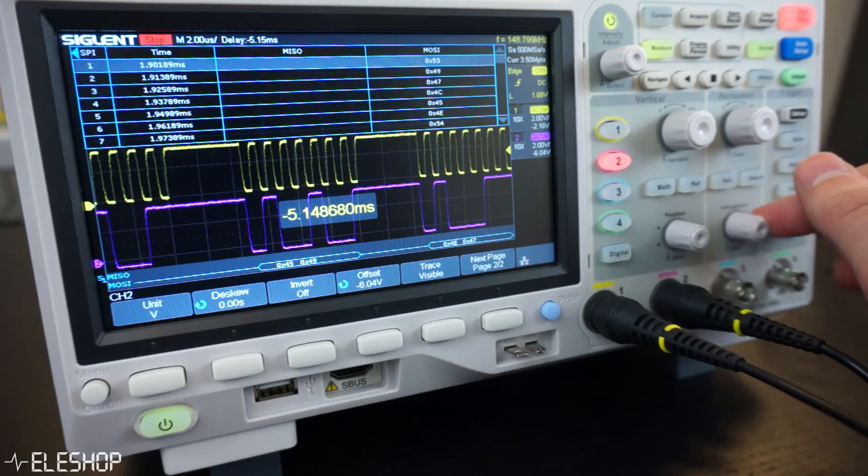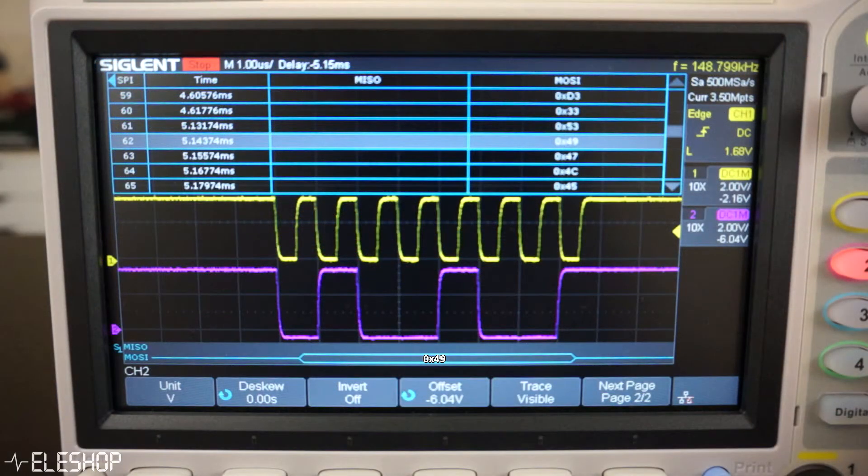Since this SPI signal is only 8 bits long, we can easily double-check if the signal is decoded correctly. As you can see, when we manually decode the signal, we find the exact same result which was also found by the oscilloscope.